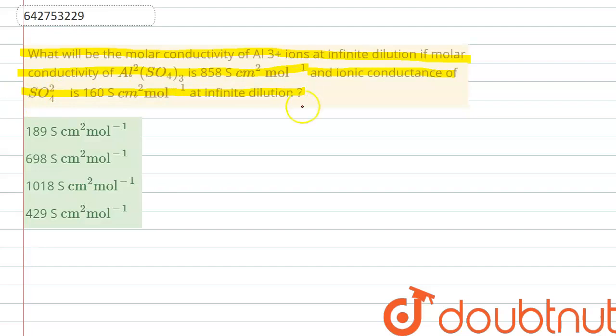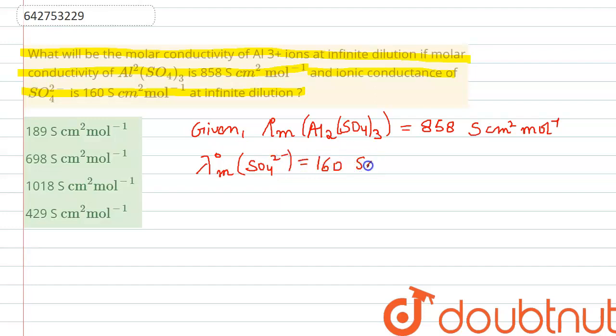Let's start by writing whatever is given to us. In the question, it is given that the lambda m0 molar conductivity at infinite dilution for aluminum sulfate is 858 Siemens centimeter square mole inverse. And for sulfate ions at infinite dilution, the ionic conductivity is 160 Siemens centimeter square mole inverse.